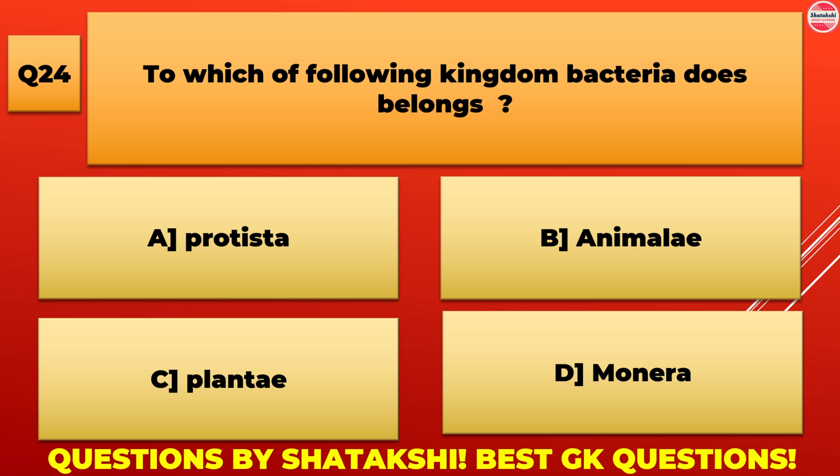The type of relationship in which one organism has no effect on the other is: A. Symbiosis, B. Commensalism, C. Mutualism, D. Parasitism. B. Commensalism is the correct answer.